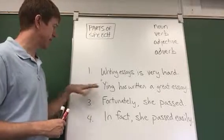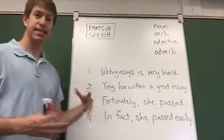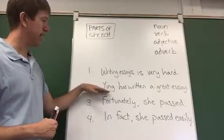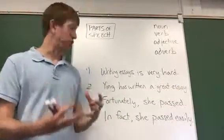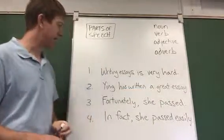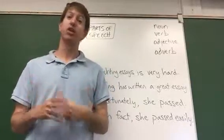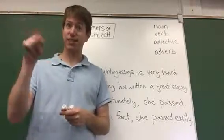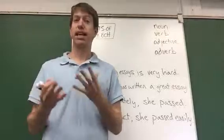So if we look at sentence number two, Ying is the subject of that sentence — Ying is the one who wrote the essay. So Ying is a noun. You can also see that essay is also a noun; that's the thing she wrote — it's actually the object of the verb. So Ying and essay are some examples of nouns. Nouns are also the kinds of things that could be plural — not every noun can be plural, but they usually take an S on them.